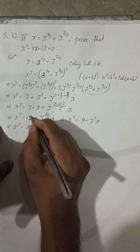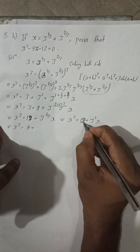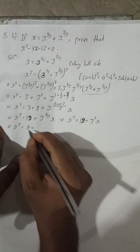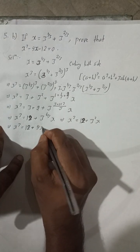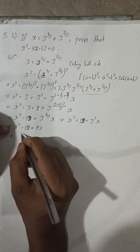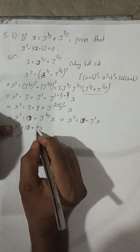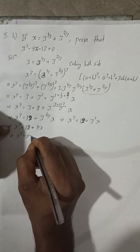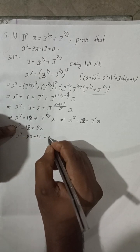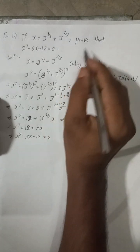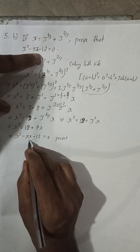So 3 plus 9 equals 12. Therefore x cubed equals 9x plus 12. Now moving 9x and 12 to the left-hand side: x cubed minus 9x minus 12 is equal to 0.